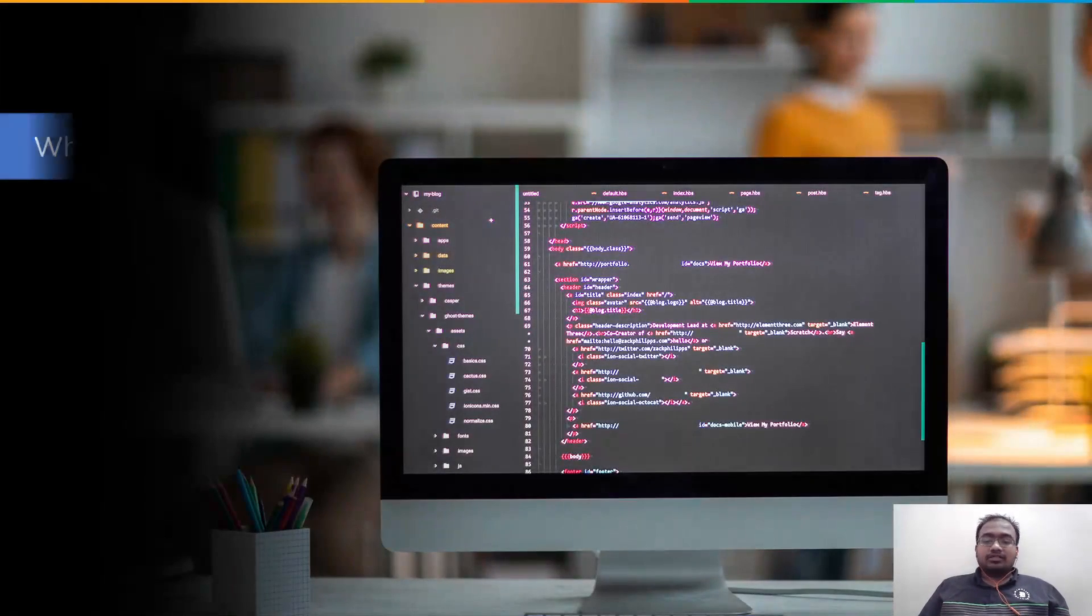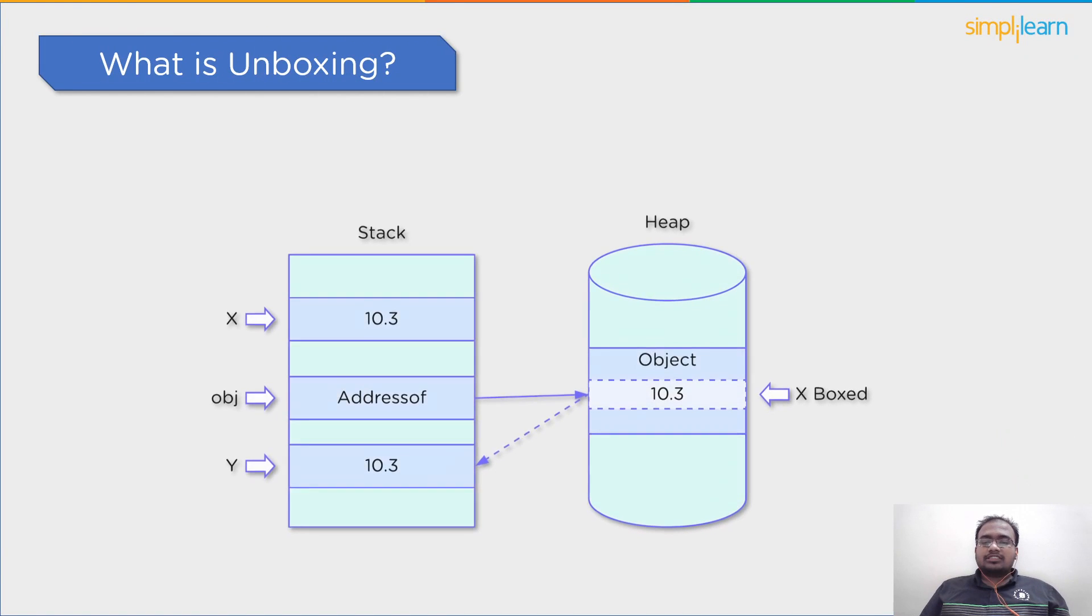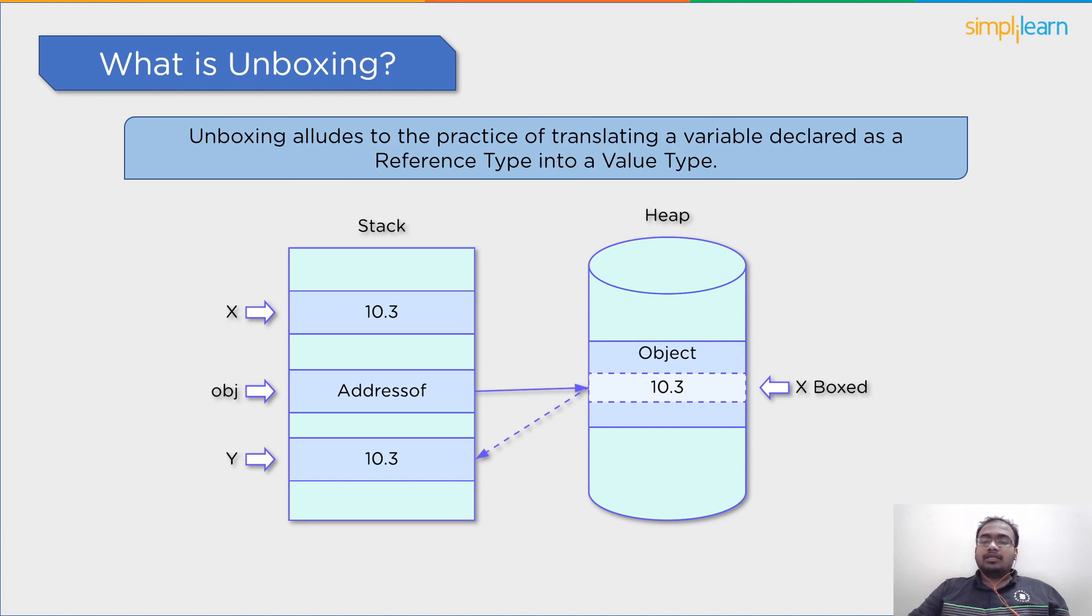Next, let's discuss what C-sharp unboxing is. First, unboxing is a technique of transforming an object type variable into a value type variable. You must double cast if you want to unbox an object into a different type than its predecessor.